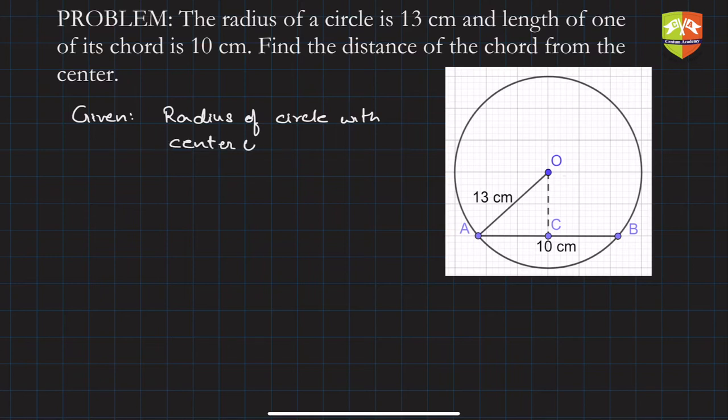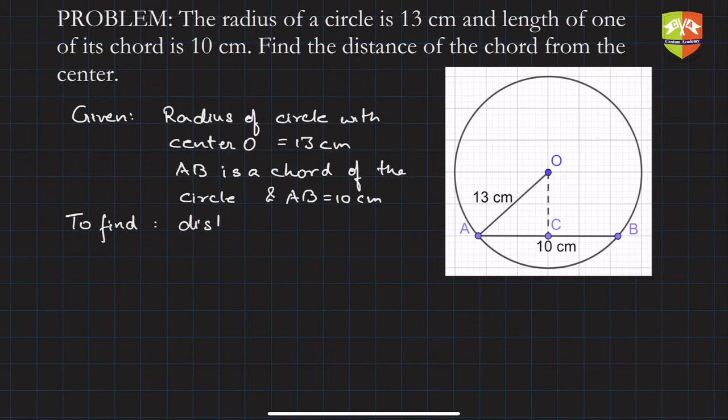AB is a chord of the circle and AB equals 10 centimeters. To find: distance of chord AB from O.